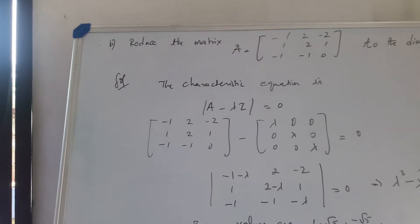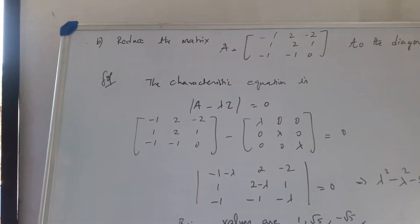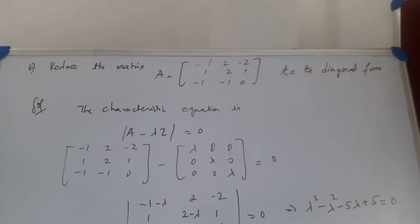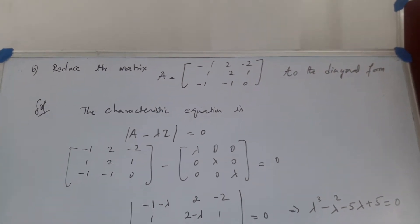The matrix is given as minus 1, 2, minus 2, 1, 2, 1, minus 1, minus 1, 0 to the diagonal form.